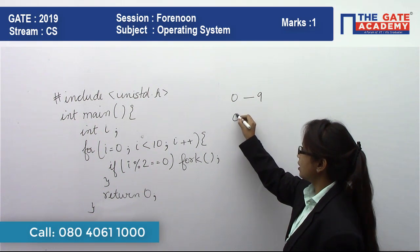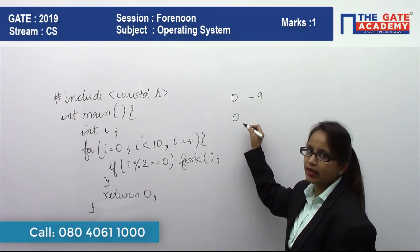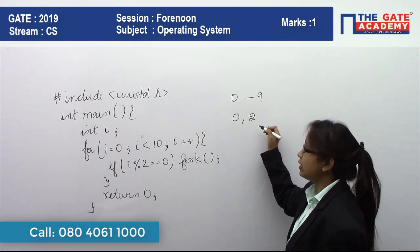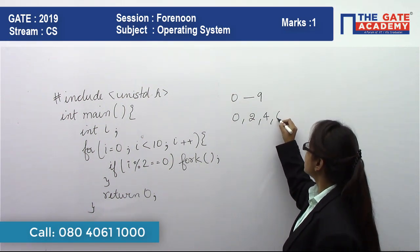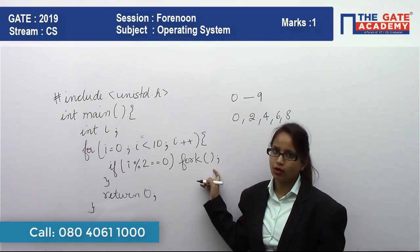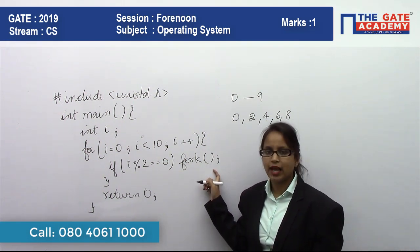First one is 0: 0 modulus 2 is definitely 0, true. Then 2: 2 modulus 2 is definitely 0. Then 4, 6, and 8. So 5 times this fork will be called.